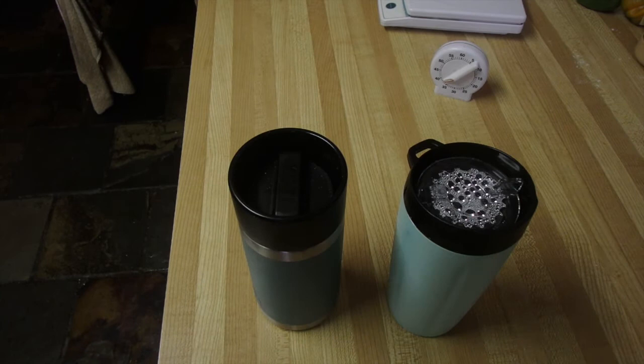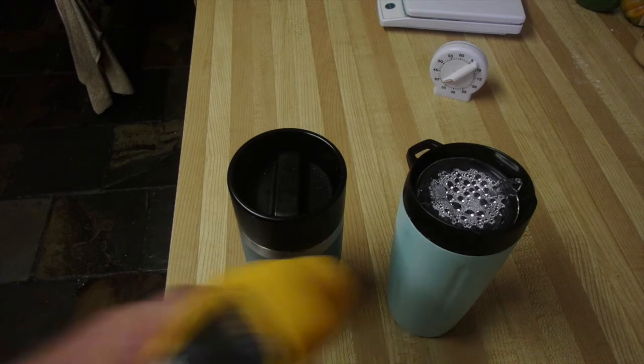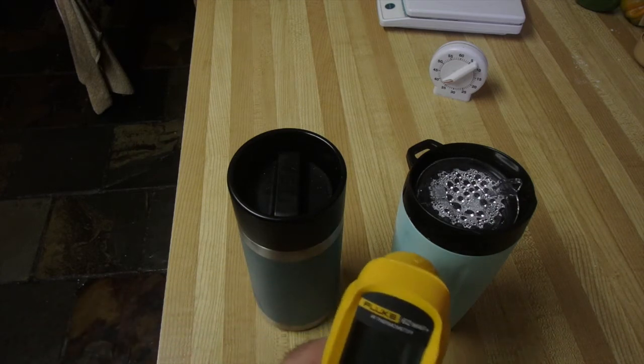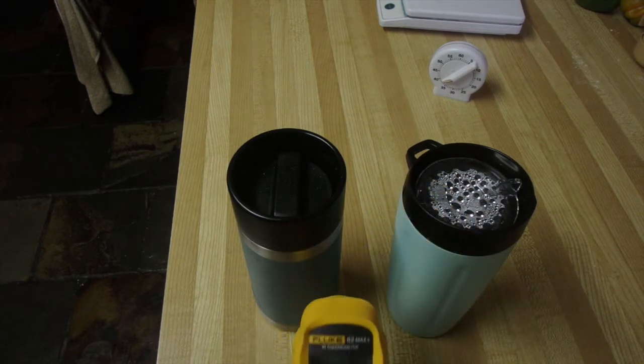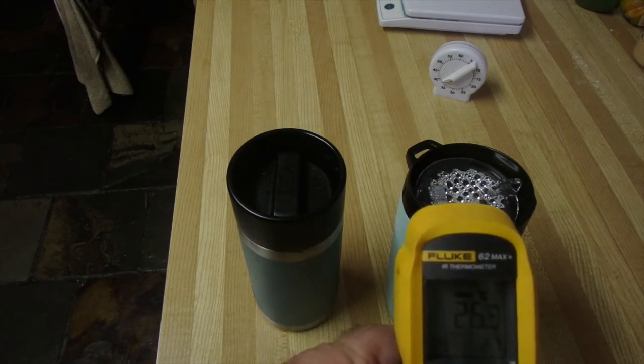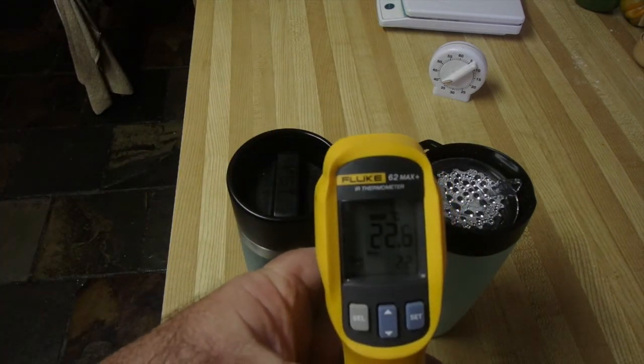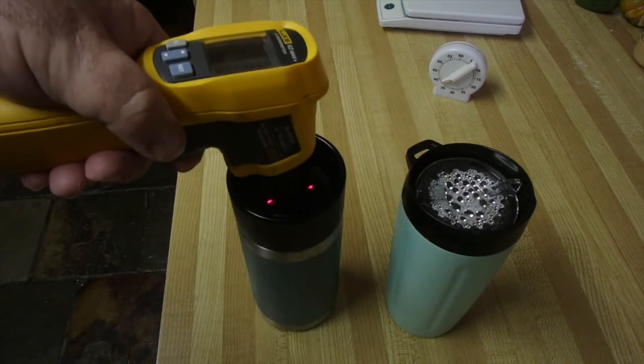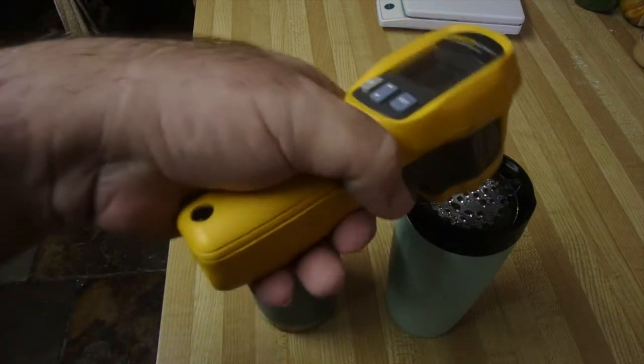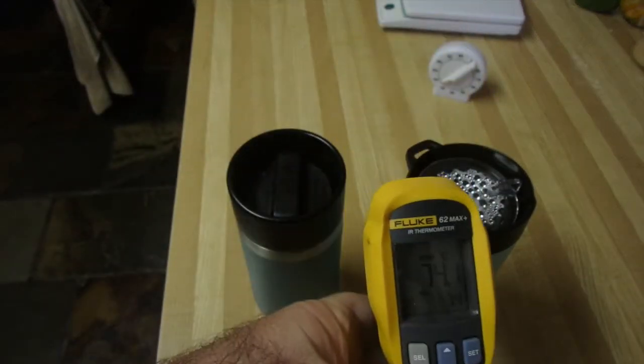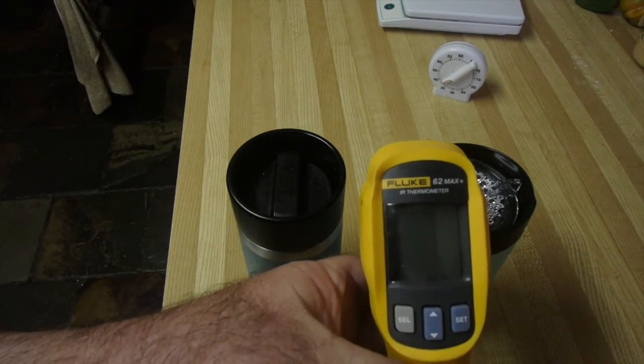Okay guys, so we're 24 minutes into the first heat retention test. I'll test the body of the Pelican, it's at 28.1. The Yeti, 26.7. The benchtop temp is 22.6. The Yeti lid is 27.5, and the Pelican is 74.1. So there's no way that's an insulated lid in any form.